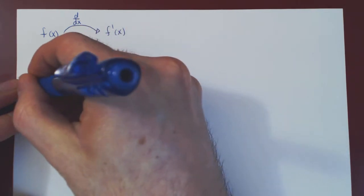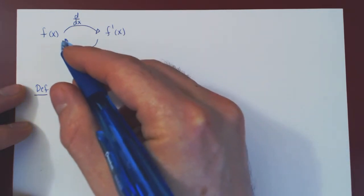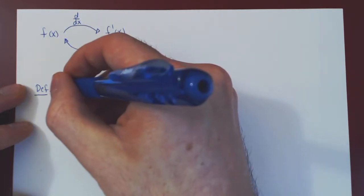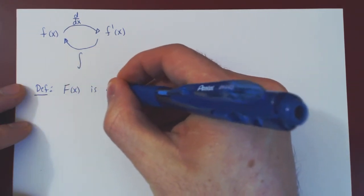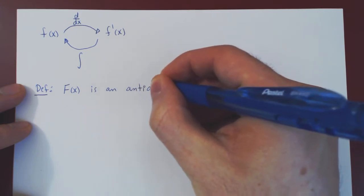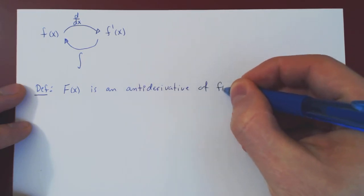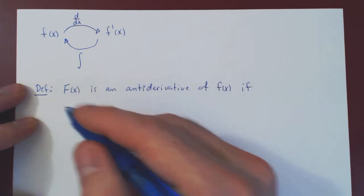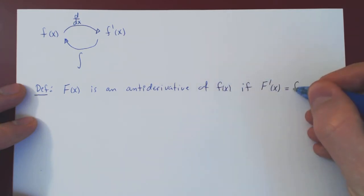Let's look at the definition, and then we'll look at some examples to really see that what we're doing is going backwards — we have the derivative of the function and we want to go back to the original. So uppercase F of x is an antiderivative of lowercase f of x if, quite simply, the derivative of uppercase F of x is equal to lowercase f of x.